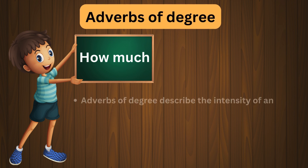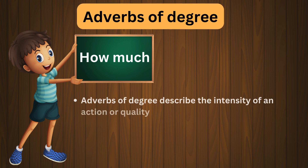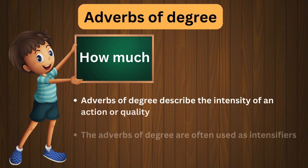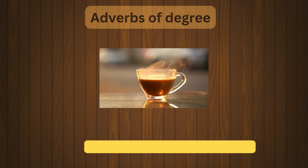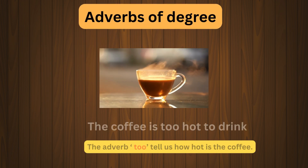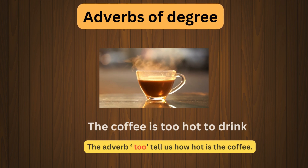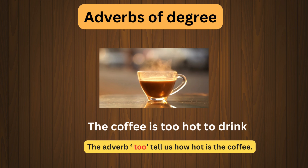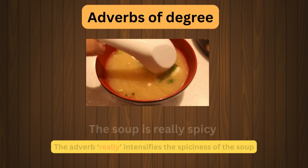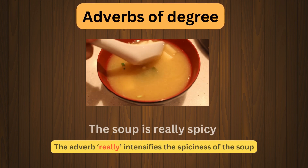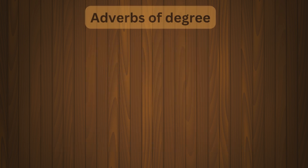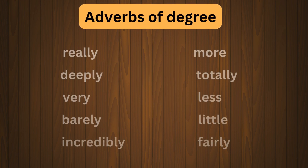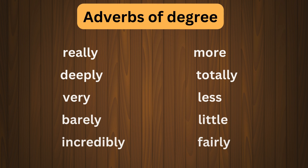Next we see adverbs of degree. Adverbs of degree describe the intensity of an action or quality, and are often used as intensifiers to describe adjectives and other adverbs. For example: The coffee is too hot to drink — the adverb 'too' tells us how hot the coffee is. Next example: The soup is really spicy — the adverb 'really' intensifies the spiciness of the soup. These are some examples of adverbs of degree that show how much or to what extent an action is performed.